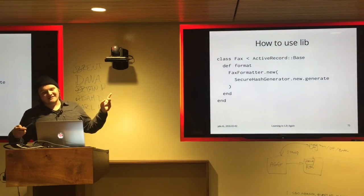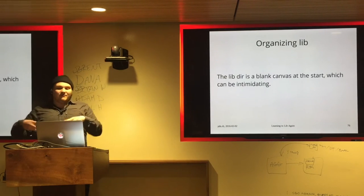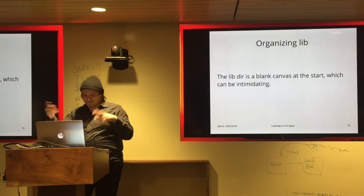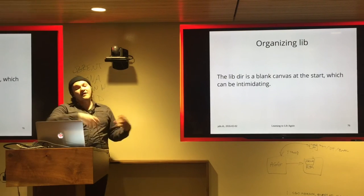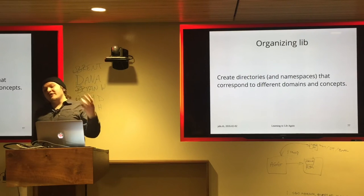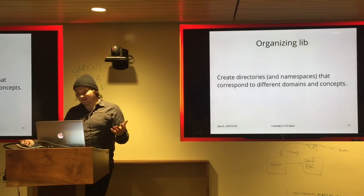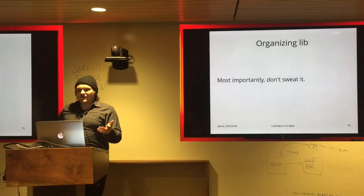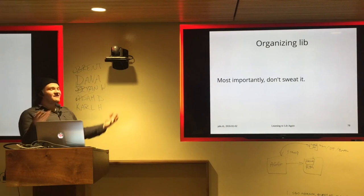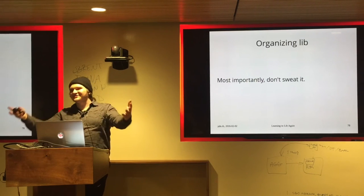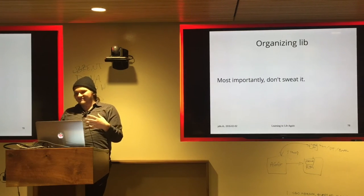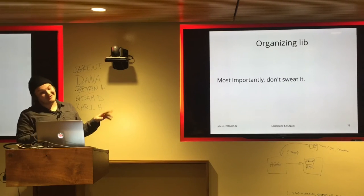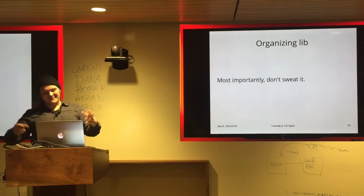When you're in the lib directory, it's all blank, which can be intimidating — when you start a new Rails project you have all the MVC directories. But in lib there's literally nothing, which is also exciting as a blank landscape. You create directories and namespaces that correspond to your concepts. Don't sweat naming — just name it what it does. If it's a really long name, change it. The thing about naming code is you can change it. Especially in lib, just put whatever you want there, call it whatever you want, as long as it describes what it's doing.